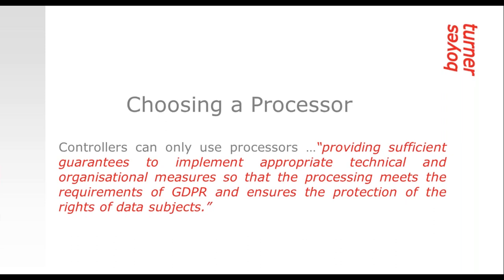Under GDPR, controllers can only use processors providing sufficient guarantees to implement appropriate technical and organizational measures so that the processing meets the requirements of GDPR and ensures the protection of the rights of data subjects. This is much broader than the current requirements and means that controllers will need to carry out a broader due diligence exercise when selecting a processor. This is going to require controllers digging deep into the realms of identifying the data flows of processors and their security measures.